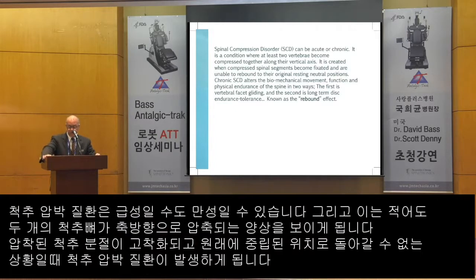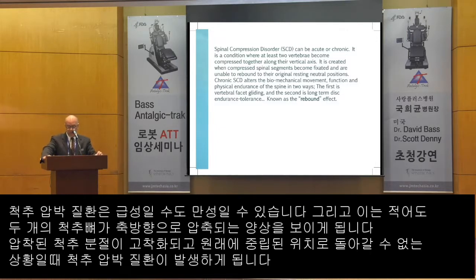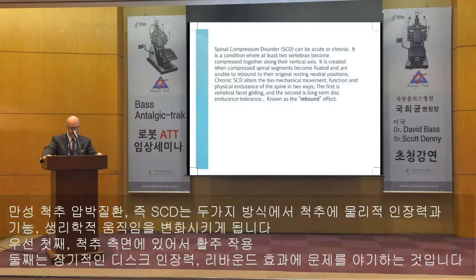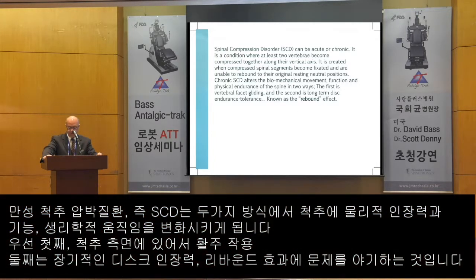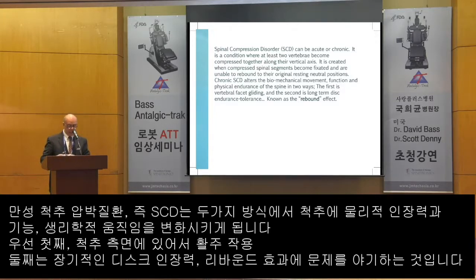Spinal compression disorder can be acute or chronic. It's a condition where at least two vertebrae become compressed together along their vertical axis. It is created when compressed spinal segments become fixated and are unable to rebound to their original resting neutral positions. Chronic spinal compression disorder alters the biomechanical movement, function, and physical endurance of the spine in two ways: vertebral facet gliding, and long-term disc endurance tolerance known as the rebound effect.